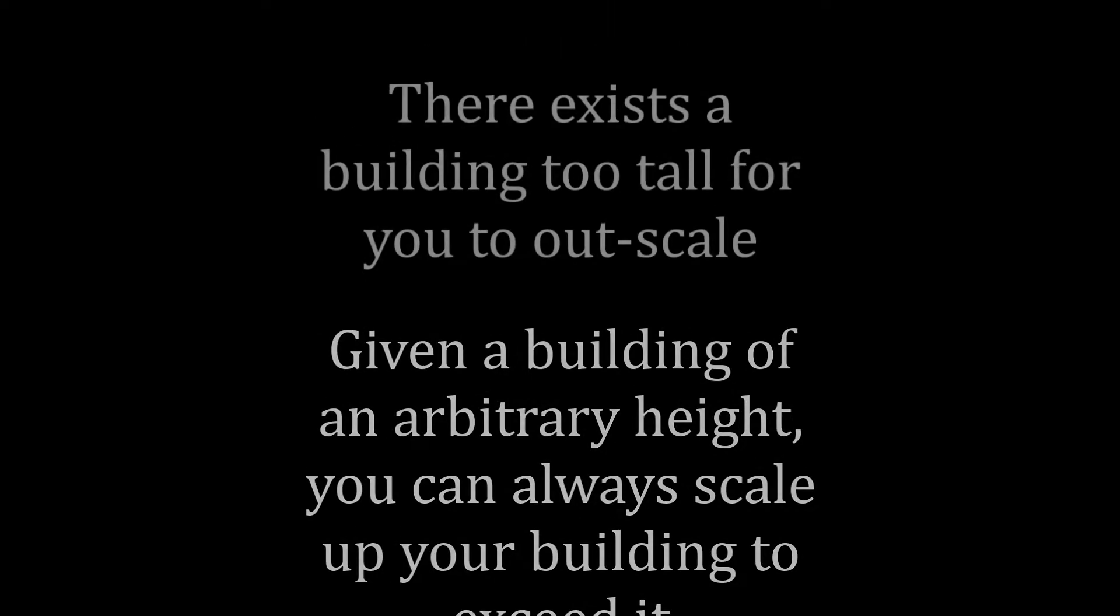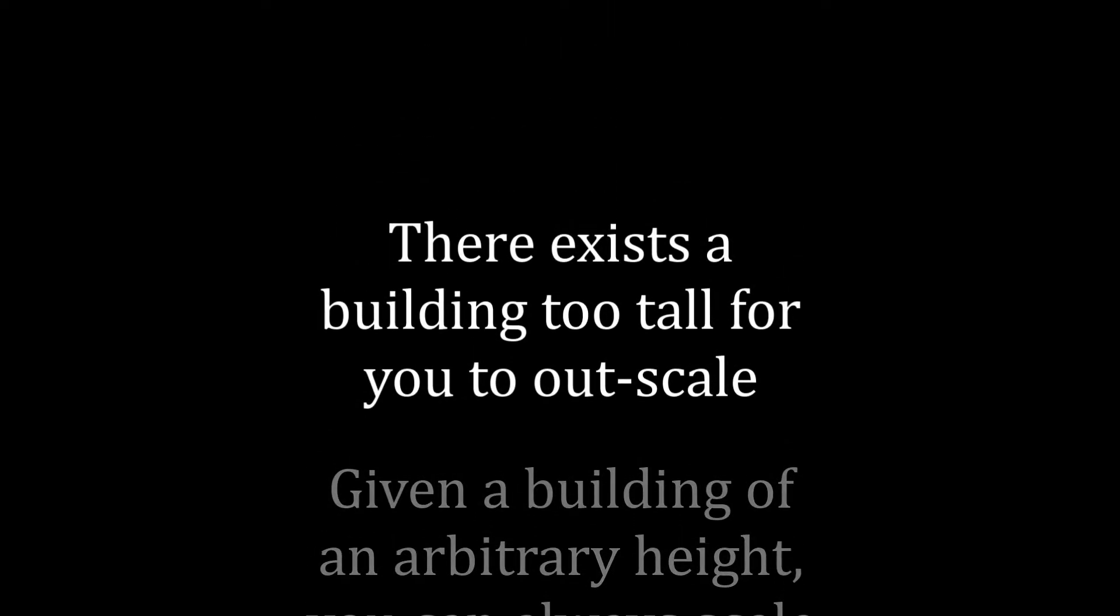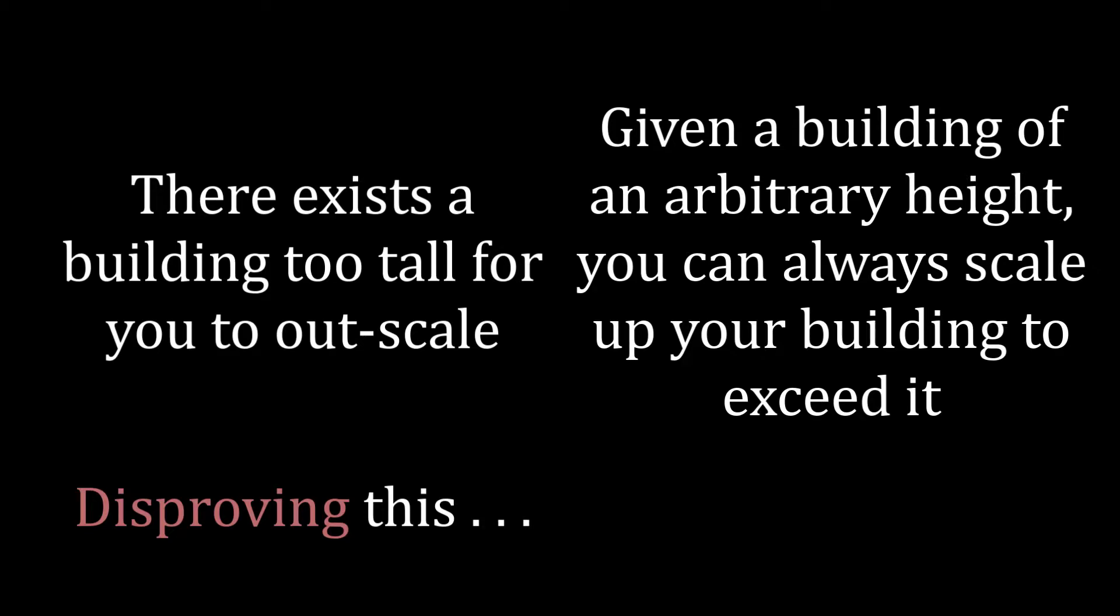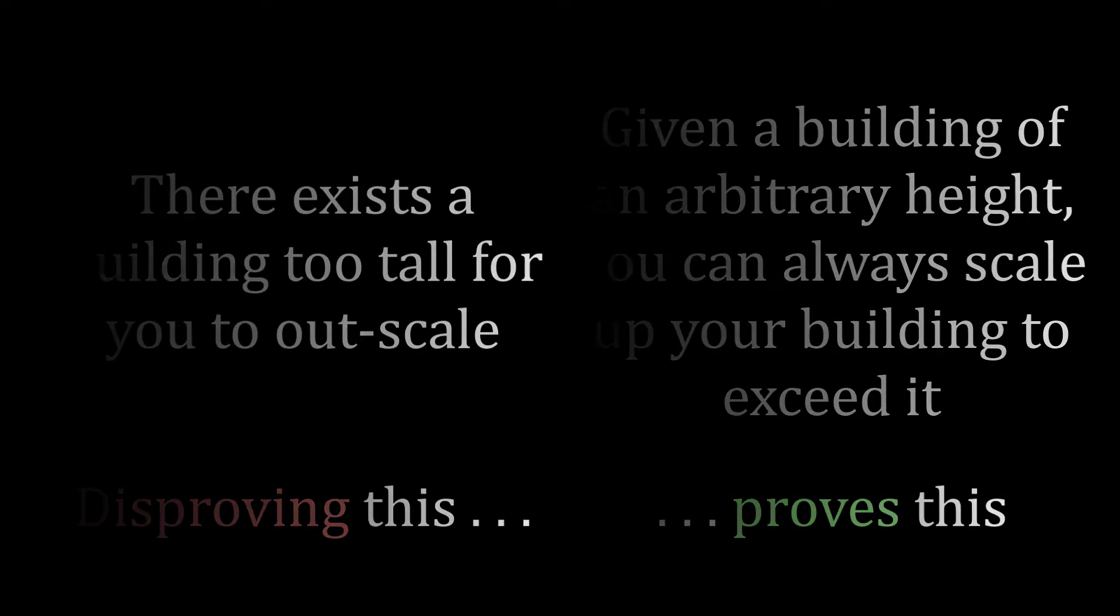Still, you're unsure how to prove this statement directly. So instead, you suppose that it is not true for some arbitrary building. If you can disprove this statement, you're in business, and you'll have proved that all buildings are outbuildable. To begin, you have your building of some height A and your competitor's building of some height B.